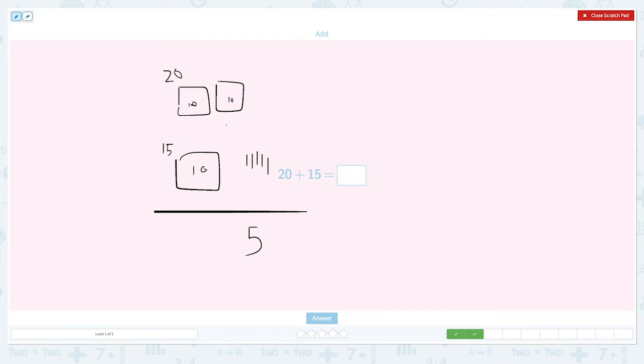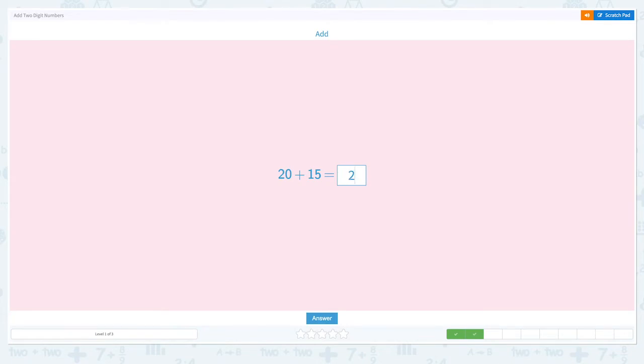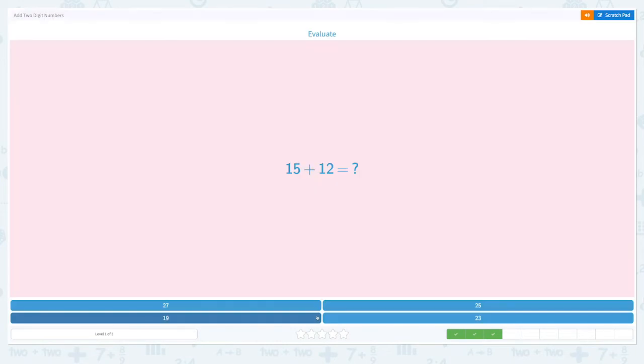And how many tens do I have? I have 1, 2, 3. 3 tens. So the answer is 35. Click. Great job.